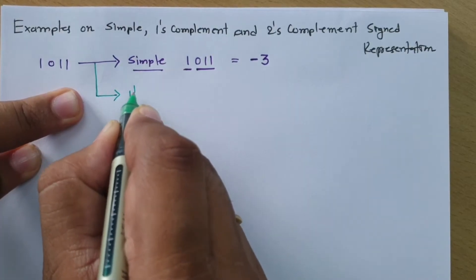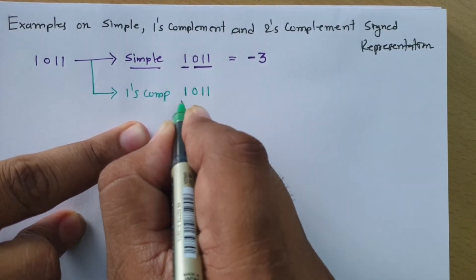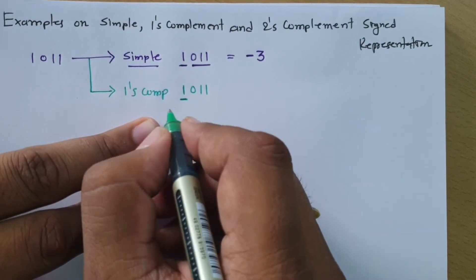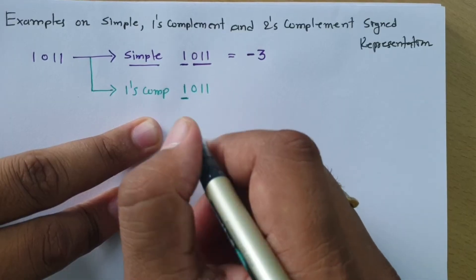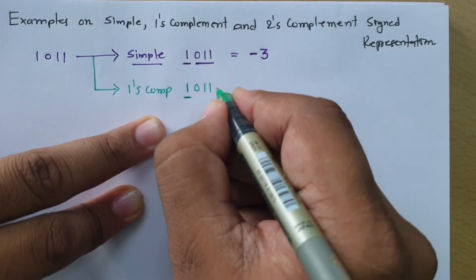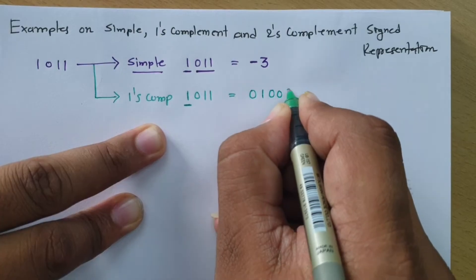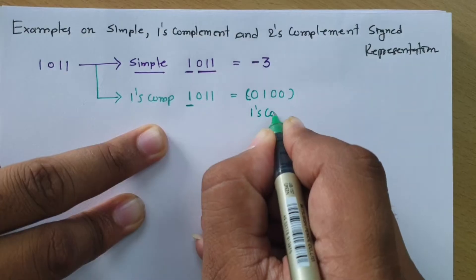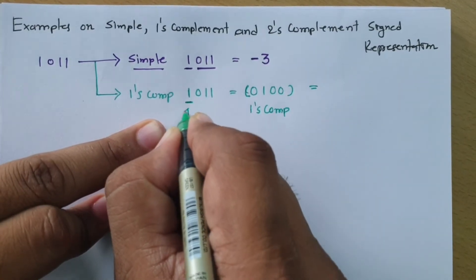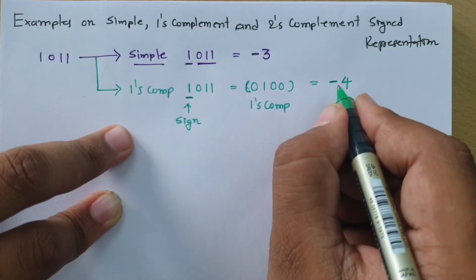Now I'll explain this number in one's complement. In one's complement, we look at the number 1011. The first bit is one, which means the number is negative — so we will assign a negative sign at the end. In one's complement, we perform the one's complement of the given number, which gives 0100. That is 4. Since the sign is negative, the answer in one's complement sign representation is minus 4.